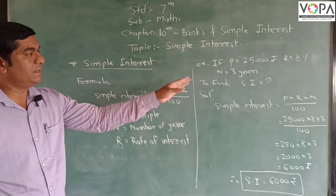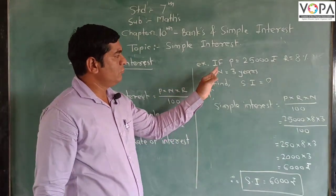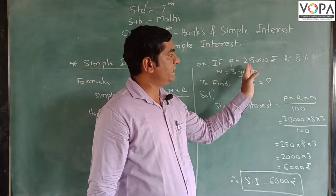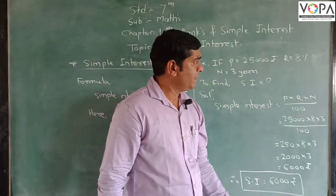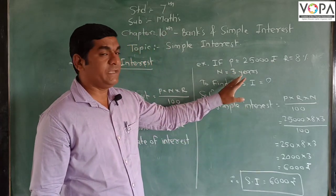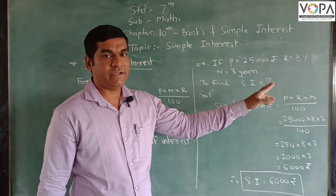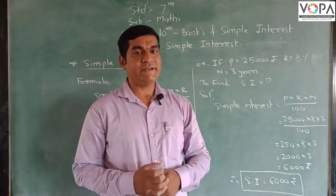So we will find an example on Simple Interest. Let us - we have here: P means Principal is 25,000, rate 8%, and number of years are 3 years. The question is to find Simple Interest.